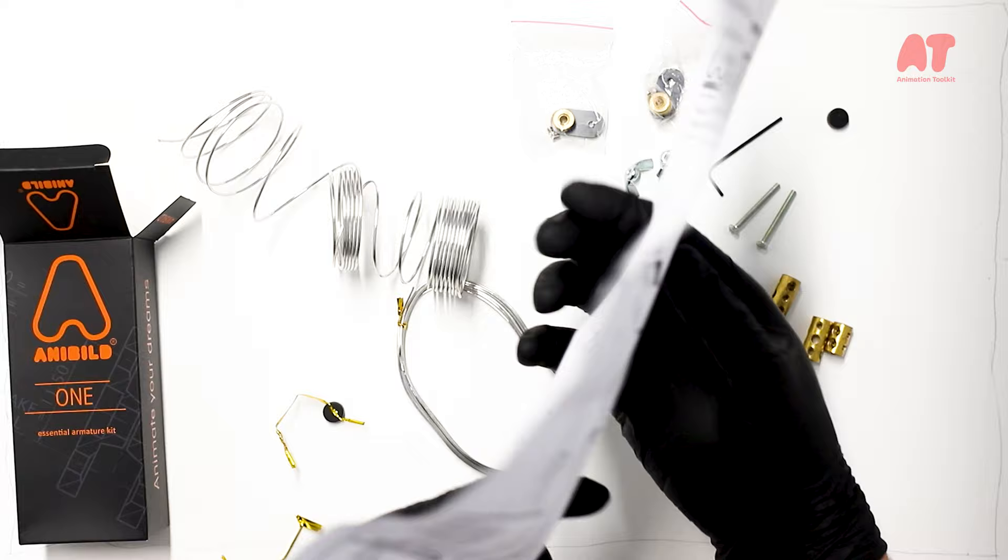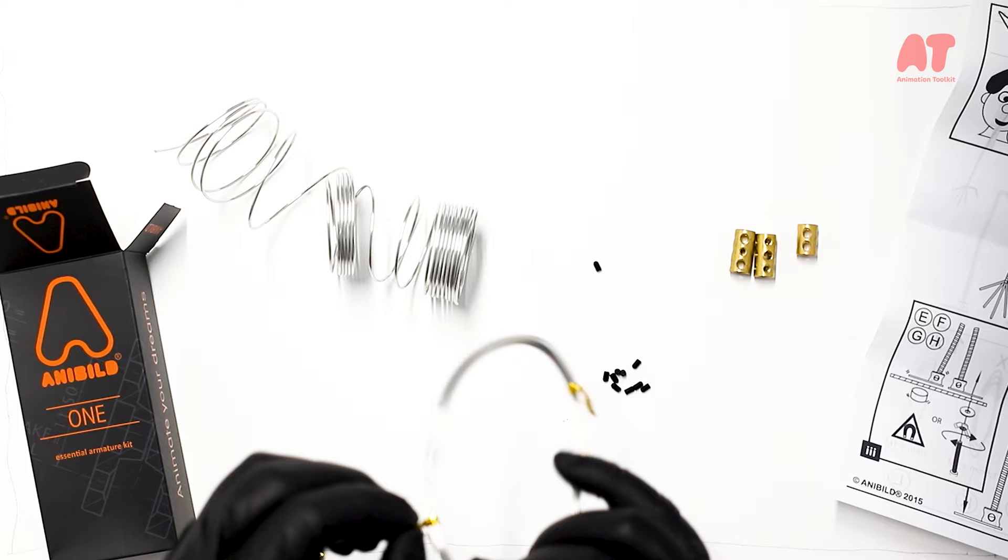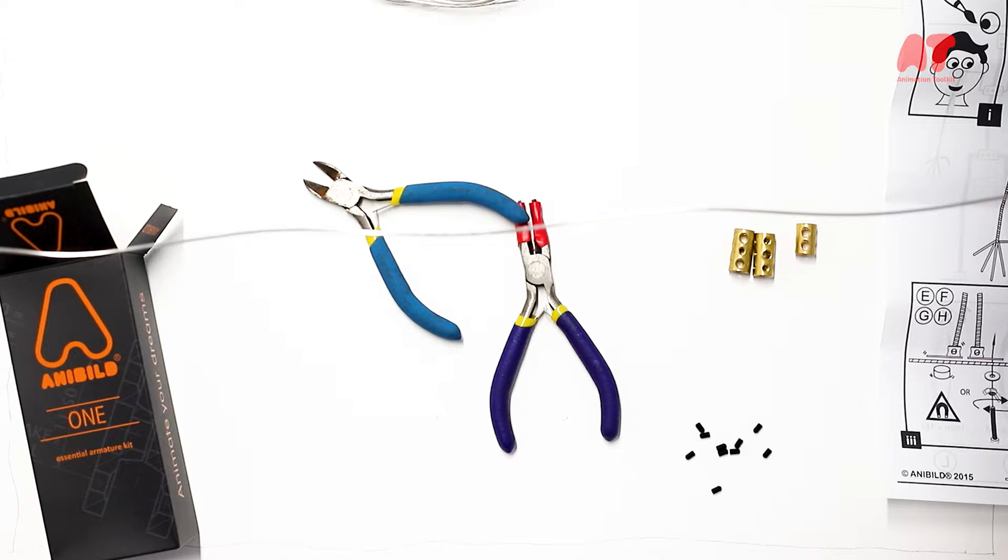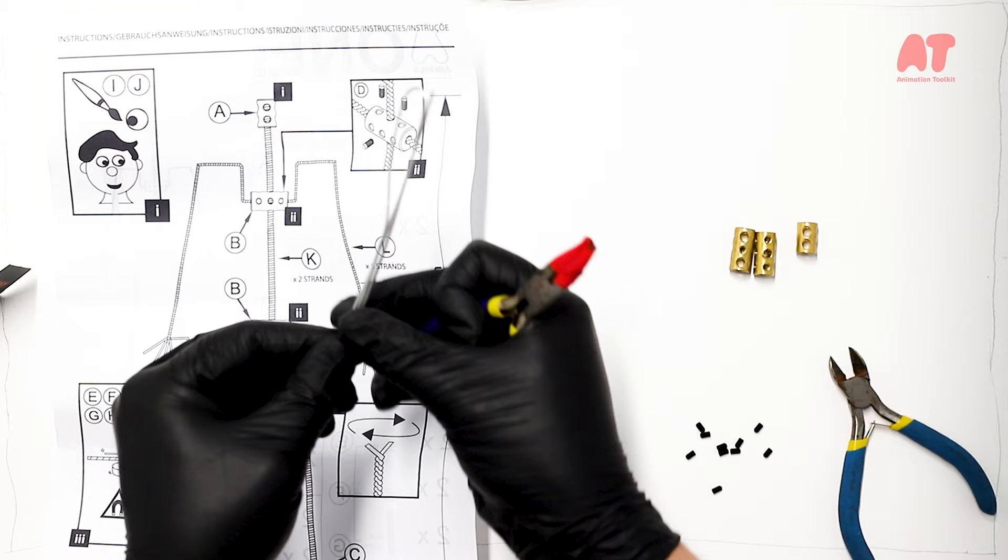After familiarizing yourself with the instructions, I'm going to start with the 1.5 millimeter aluminum wire—that's the thicker one. We're going to make our backbone. We need two pairs of pliers. You'll notice one pair has the teeth wrapped in tape so we don't damage the aluminum wire as we twist it.